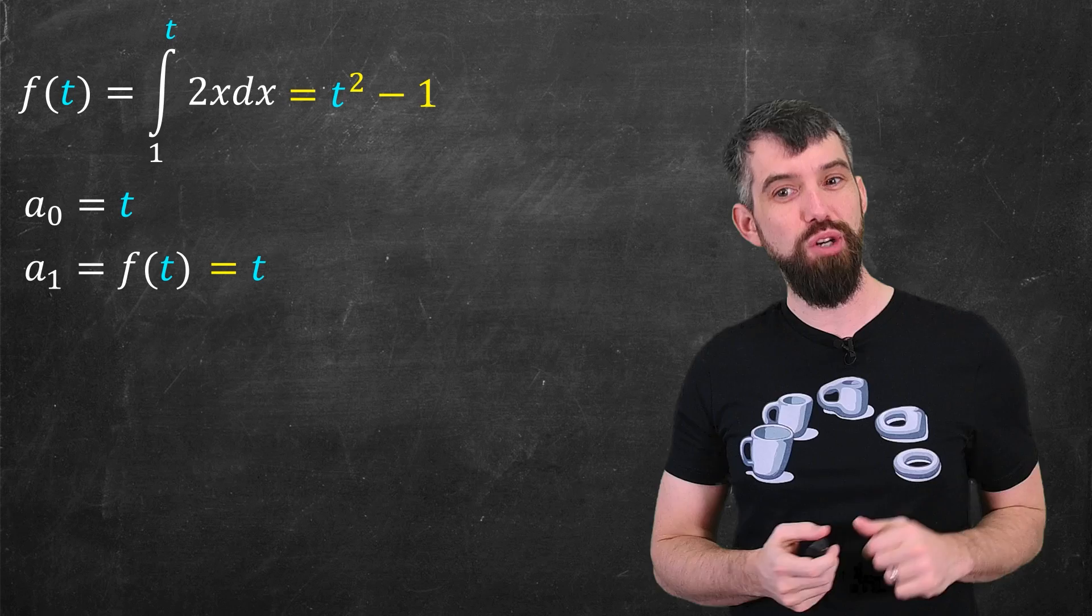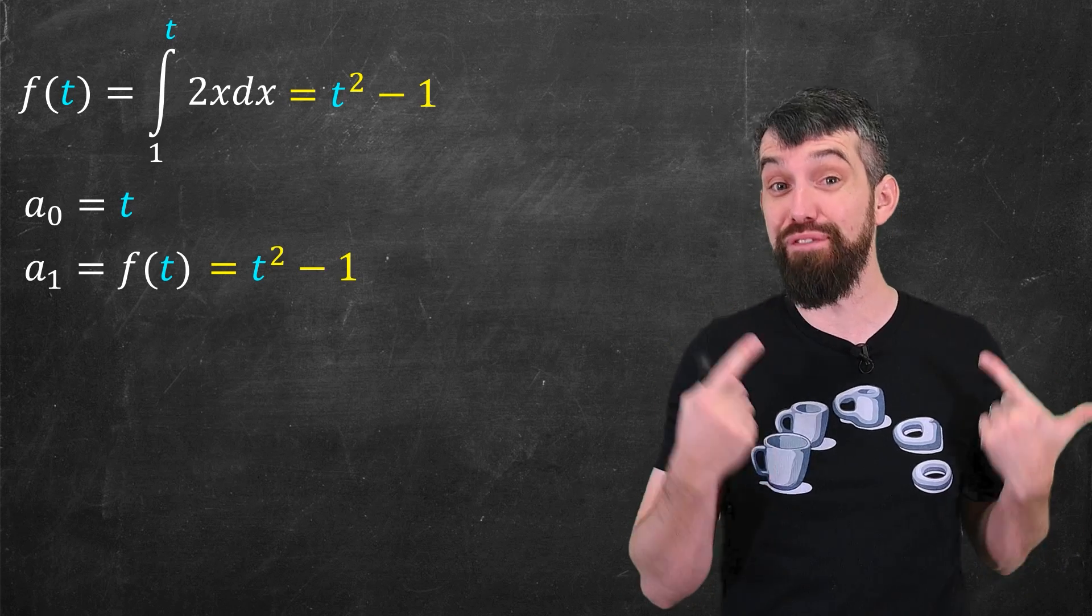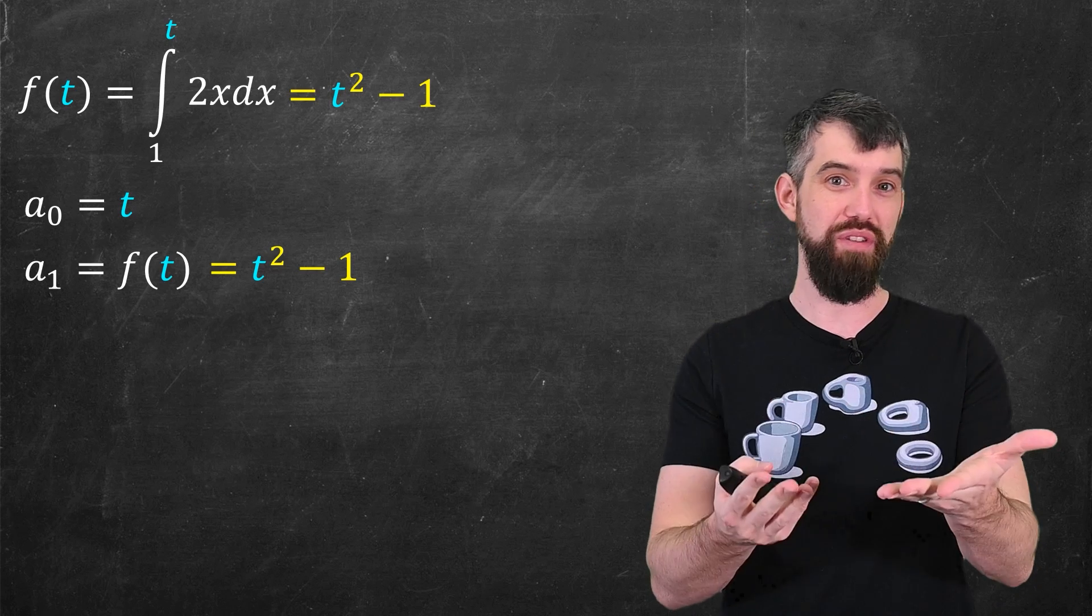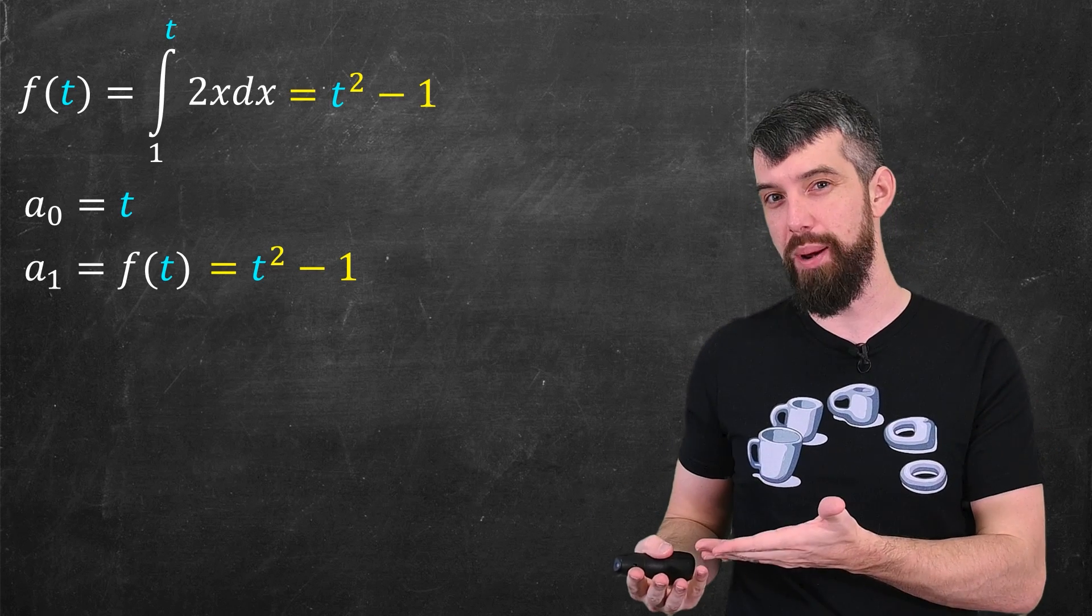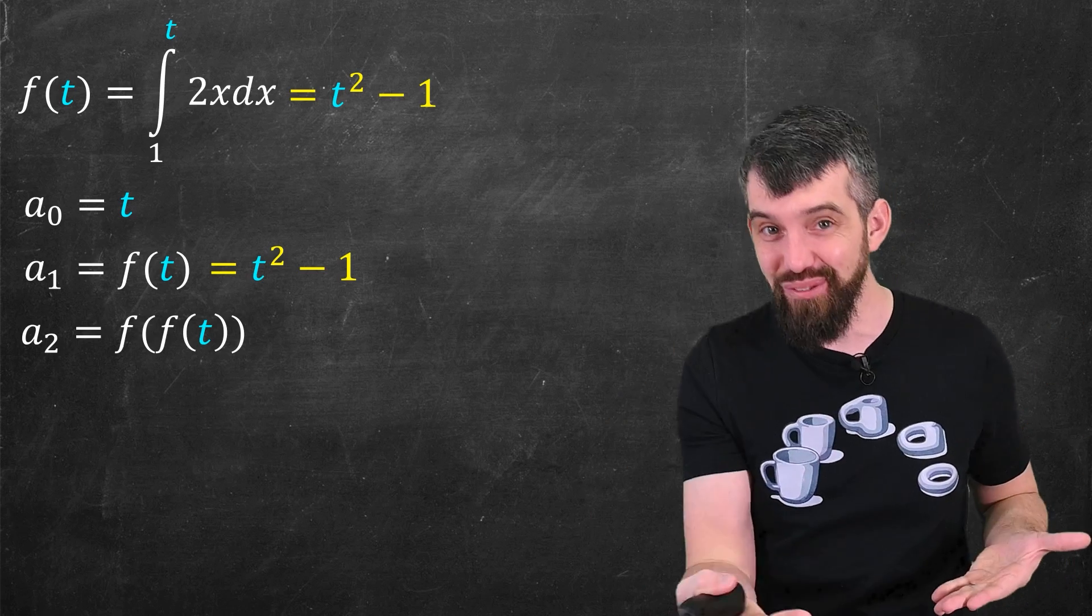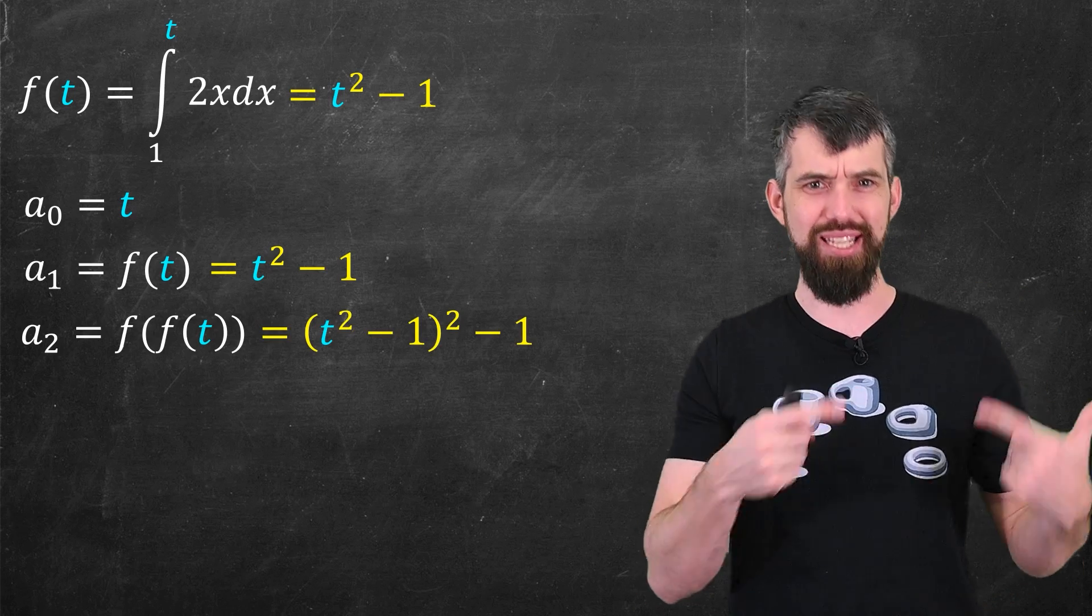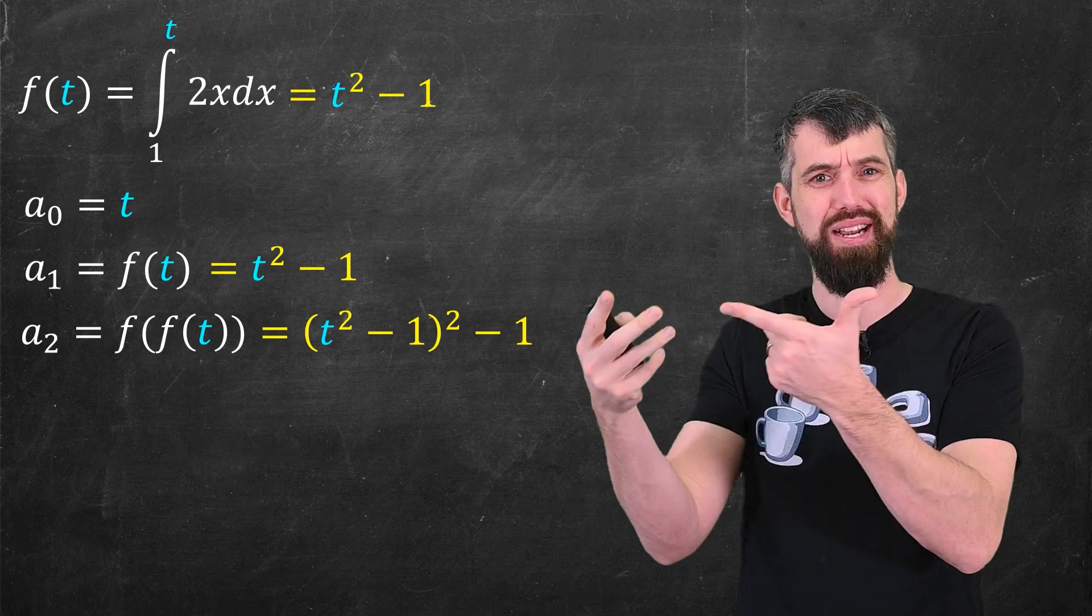Then the next term in my sequence, a₁ of t, is you do one integral, or you apply the function once. So wherever you start, now you write t squared minus 1. Then for a₂, you do that again. You take the function of the function of t, which in this case would be (t² - 1)² - 1.